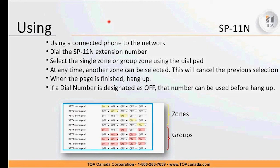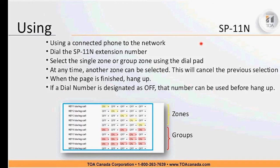To use the module: connect to the phone network, dial the SP11n extension number, then select a single zone or group using the dial pad — buttons one through ten representing what you've programmed. At any time another zone can be selected; it will hang up the previous zone and engage the new one. When the page is finished, simply hang up. If you've designated a dialing number as all-off, dial that before replacing the handset to avoid cradle noise. That's how the user dials in and uses the system.